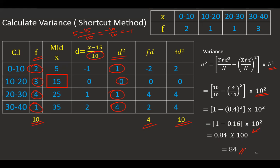This is how we calculate variance using the step deviation method. This method is less popular, so I would suggest not to go for the step deviation method — you can always go with the shortcut method, as it is easier. Thank you very much for watching this. Have a good day. Kindly subscribe to my channel and comment if you have any queries. Thank you very much.